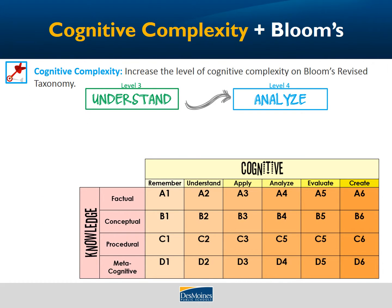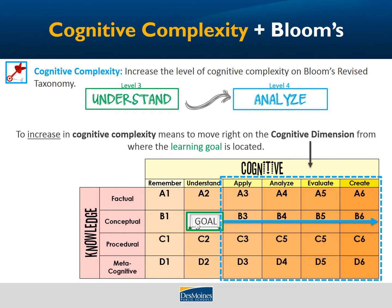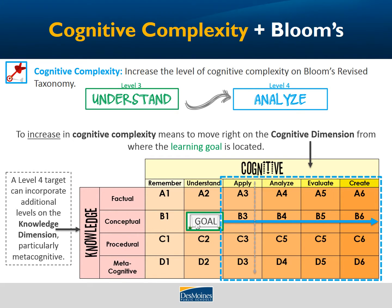Let's take a look at Bloom's. To increase the cognitive complexity means to move right on the cognitive dimension from where the learning goal is located. So for example, if my goal is in the 'understand' column, anything to the right — applying, analyzing, evaluating, or creating — could be where I place my level 4 learning target. It's also important to remember that we can move up and down on the knowledge dimension as well: factual, conceptual, procedural, metacognitive. Especially that metacognitive dimension, which really ups the level of rigor when we get students thinking about their own thinking.